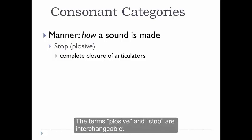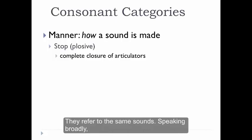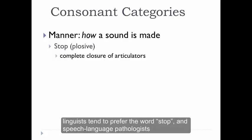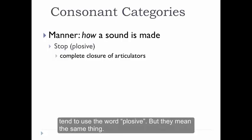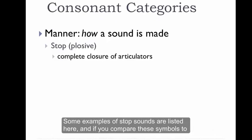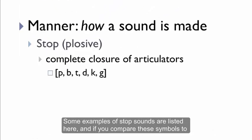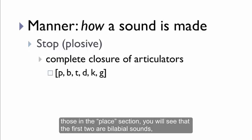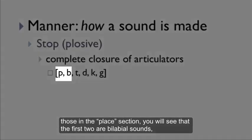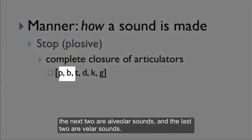The terms plosive and stop are interchangeable — they refer to the same sounds. Speaking broadly, linguists tend to prefer the word stop, and speech-language pathologists tend to use the word plosive, but they mean the same thing. Some examples of stop sounds are listed here, and if you compare these symbols to those in the place section, you'll see that the first two are bilabial sounds, the next two are alveolar sounds, and the last two are velar sounds.